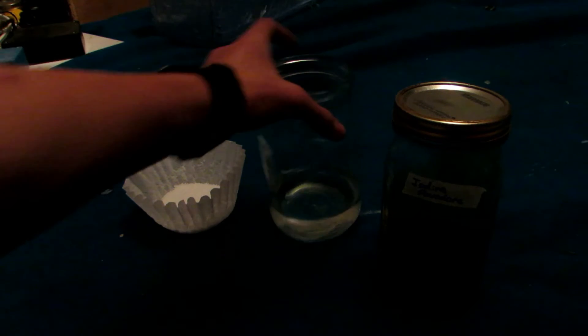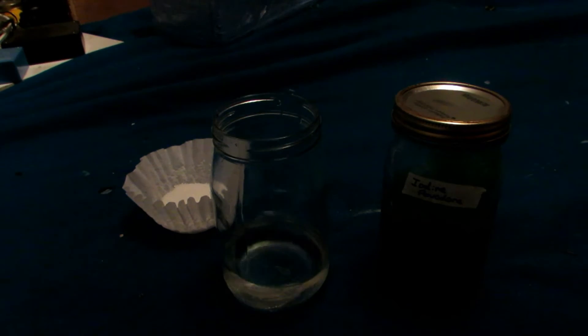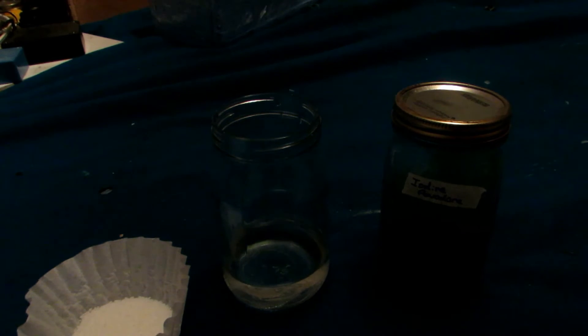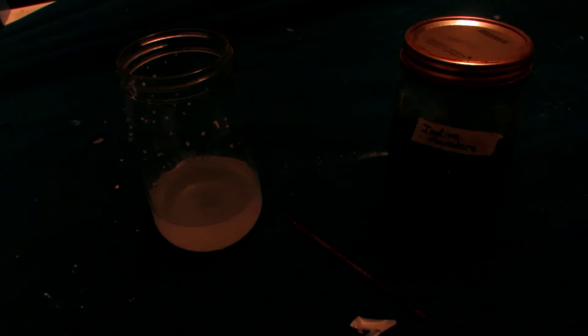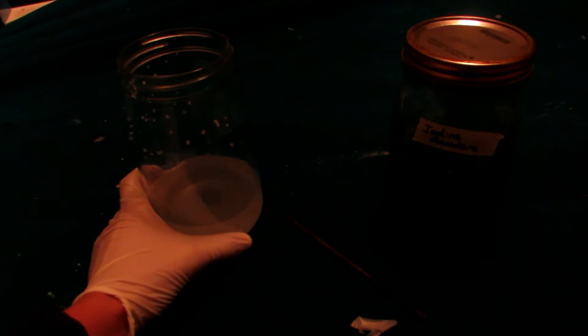So the first step is to take approximately 200 milliliters of water and prepare a sodium hydroxide solution. So I have about 80 grams of sodium hydroxide here, which we'll slowly add to this water with vigorous stirring to help dissolve. Okay, so now we have a nice concentrated solution of sodium hydroxide, perfect for our reaction.